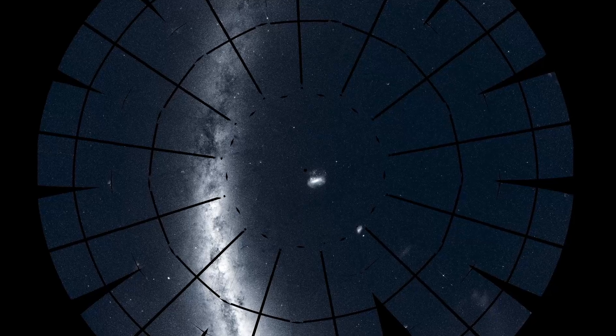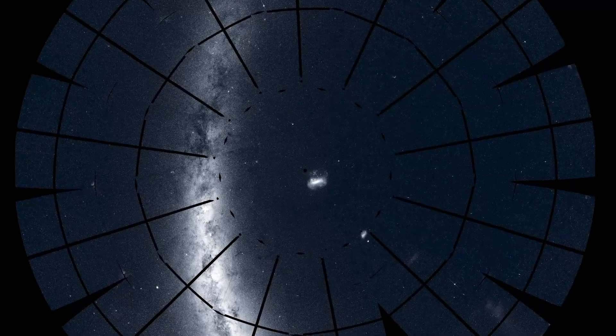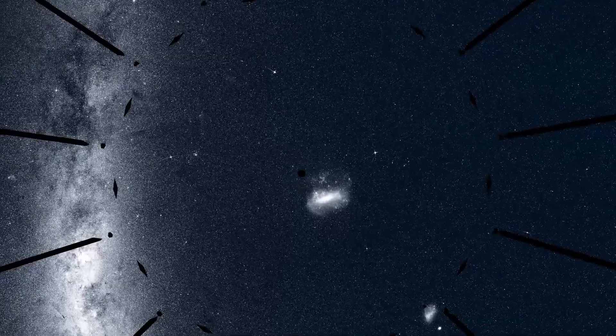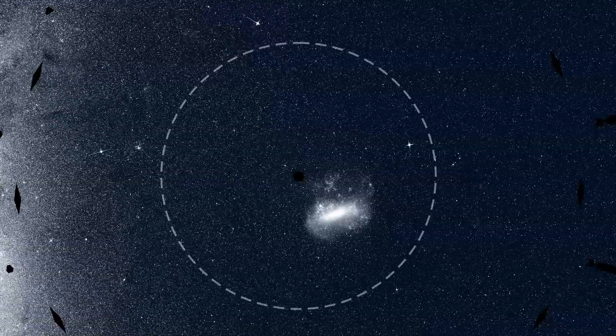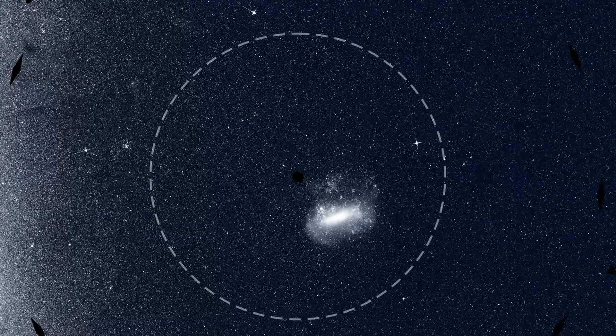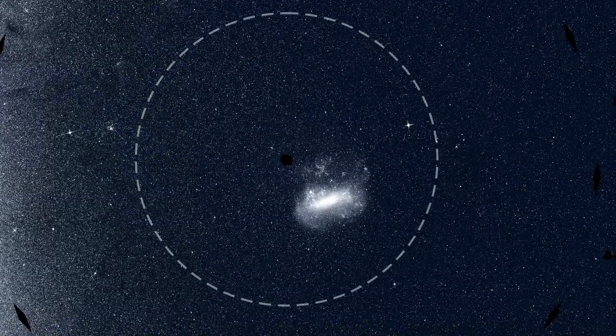Zooming into the mosaic, it's clear how much detail and how many stars TESS has captured. At the center is the continuous viewing zone, where the view of one TESS camera overlaps all 13 sectors.